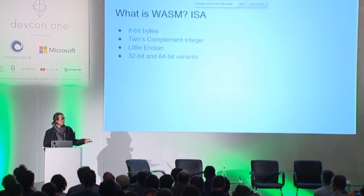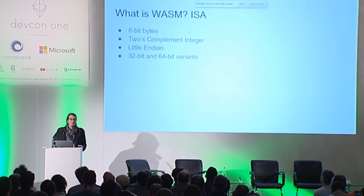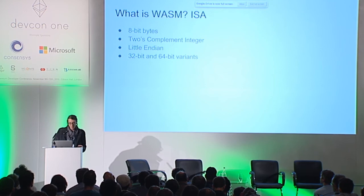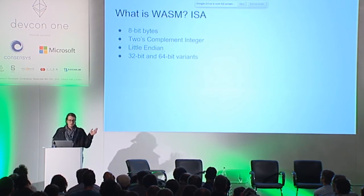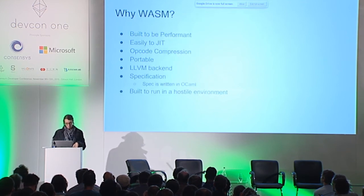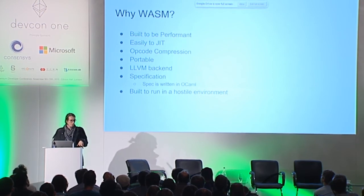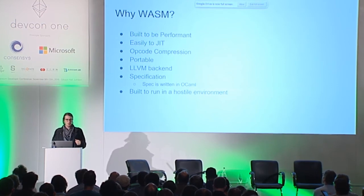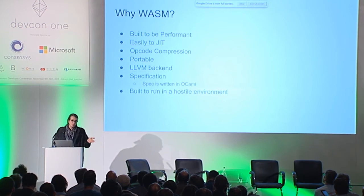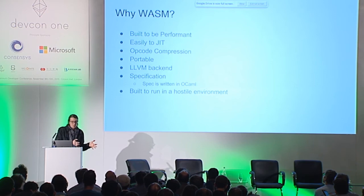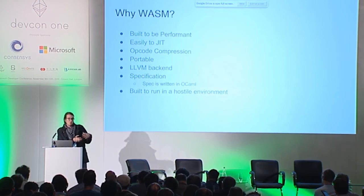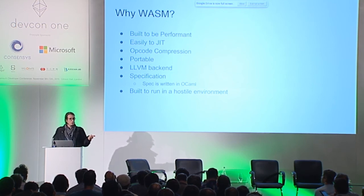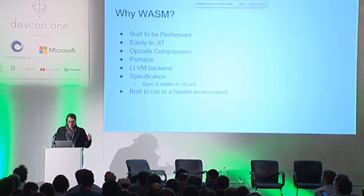The instruction set is pretty unsurprising — people have been designing instruction sets for a long time and they really haven't changed for the past 50 years. It's 8-bit bytes, two's complement, and little-endian. It comes in two variants: 32-bit and 64-bit. Why would WebAssembly possibly be good for use on a blockchain? It's built to be performant and built to be JIT-compiled. It came from JavaScript, which is really dynamic and hard to JIT, and it's essentially the complement — something not so dynamic and easy to JIT. Opcode compression is built in, which is important on the web when sending bytes across the wire, and even more important on a blockchain.